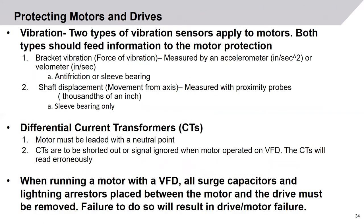There is also vibration protection. There are two types of vibration sensors that apply to motors, and both types should feed information to motor protection. Bracket vibration measures the force of the vibration, measured by an accelerometer in inches per second squared, or by a velometer in inches per second. This applies to motors with any friction or sleeve bearings. The other protection required is shaft displacement — actual movement about an axis due to vibration — measured with proximity probes in thousandths of an inch. Due to construction, this applies to sleeve bearings only.